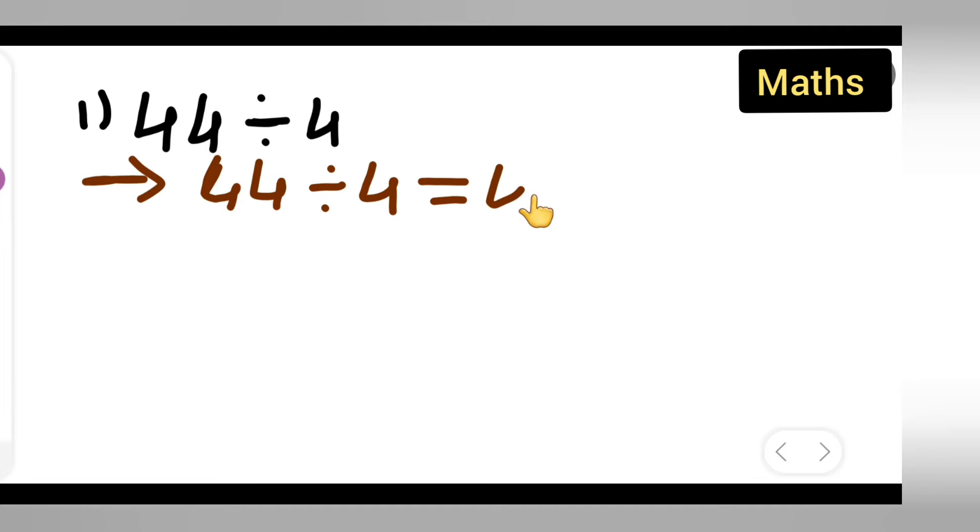So write down 44 divided by 4. First write down this 44 as it is, then multiply it with the reciprocal of 4. That is 1 upon 4.